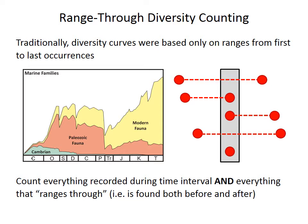Issues of fossilization and the amount of exposed rock may be important, but there are even more fundamental problems with how curves like the Sepkoski curve have been constructed. They use a method of counting taxa called range-through counting, named because the data are ranged through from their first and last occurrences. This method was used because the data sets only recorded first and last occurrences of a taxon.